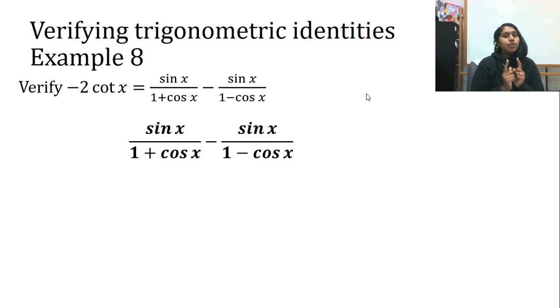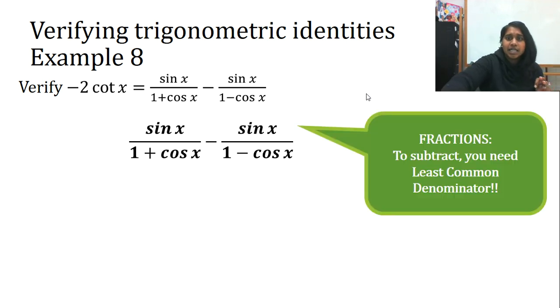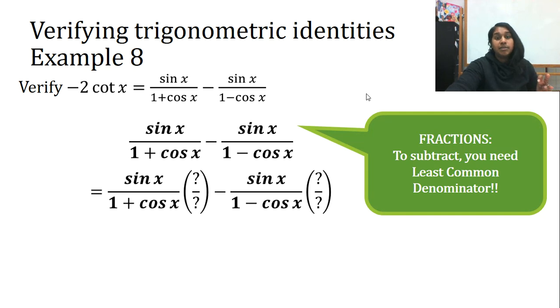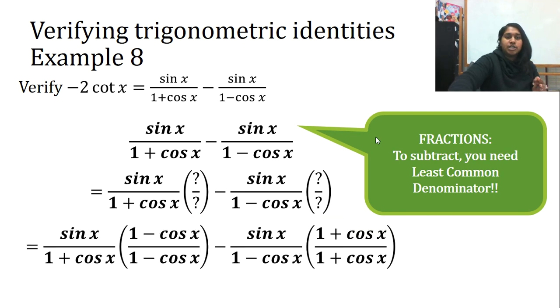Look at what you got on bottom. Those kind of look like Pythagorean identities, but they're not quite there. So what's our big vocabulary word starts with a C? Conjugation. Fantastic. So I'm going to get my least common denominator by multiplying - I multiply this by the negative and this one by the positive. I want that conjugation.